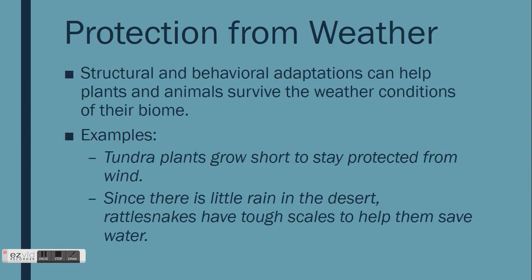Plant and animal adaptations serve different purposes. Some structural and behavioral adaptations are designed to protect organisms from the weather conditions of the biome in which they live. For example, plants found in the tundra grow very short. This is a structural adaptation that protects them from the strong wind conditions. Another adaptation for weather is the ability of rattlesnakes to retain water with their tough scales. This is a great structural adaptation to have when there is very little rainfall.